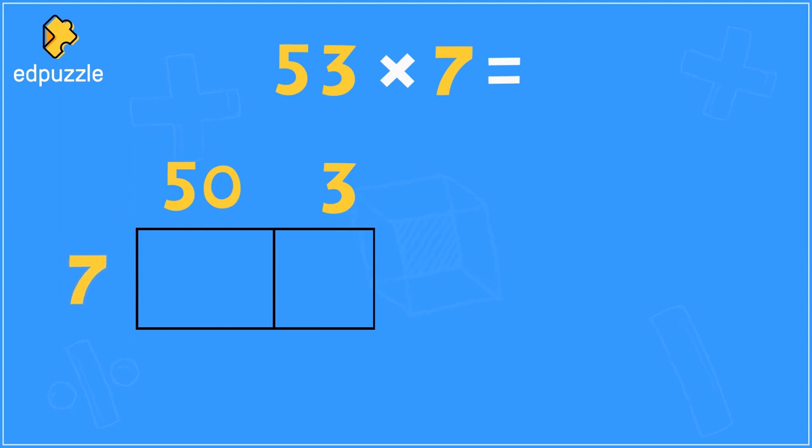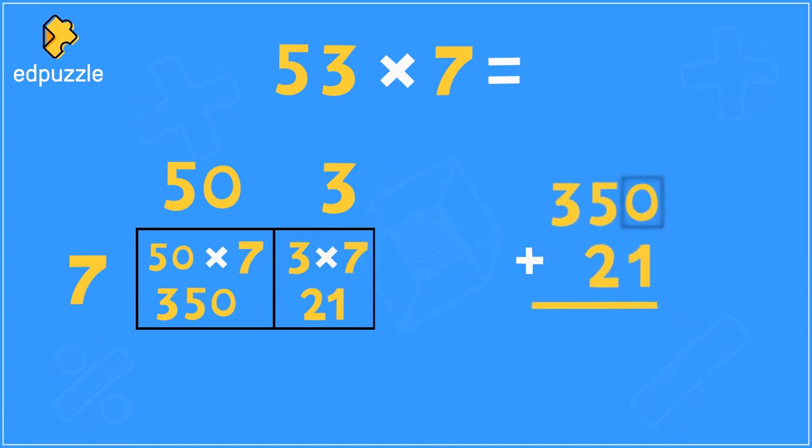In the first box, we were going to multiply 50 times 7. To solve this, you just ignore the 0 and multiply 5 times 7. That gives you 35. From there, you can just add the 0. 50 times 7 is 350. In the second box, we're multiplying 3 times 7. Well, 3 times 7 is 21. Next, you needed to add together 350 plus 21. When you do this, 0 plus 1 is 1, 5 plus 2 is 7, and 3 plus nothing is just 3. So 53 times 7 equals 371.